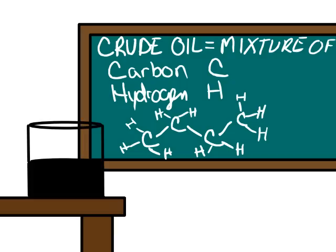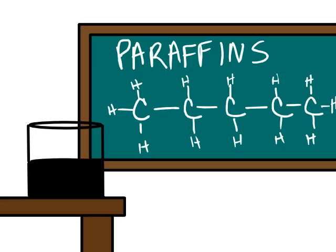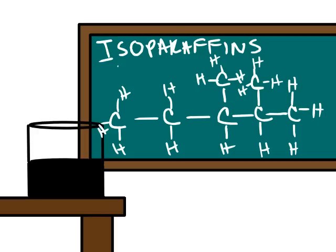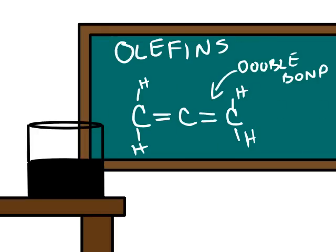Crude oil is a mixture of carbon and hydrogen based molecules of various sizes and shapes. These molecules can be straight single bonded carbon chains called paraffins, or if they are branched, they are referred to as isoparaffins. If the straight chains have double bonds, they are called olefins.